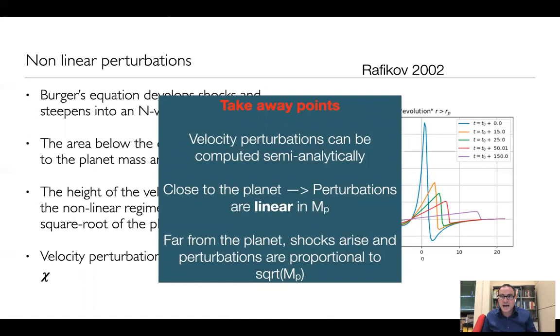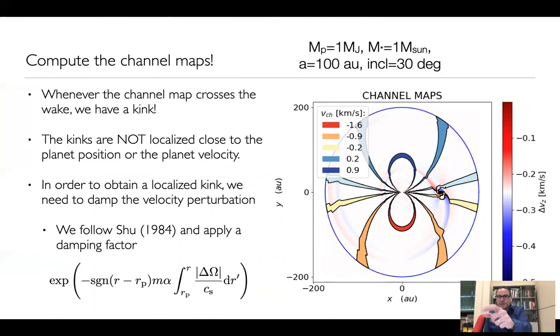Once we have the velocity perturbation, we can compute the isovelocity curves, or the channel maps, if you like. This is one example for the parameters written there on top. And what I show here is both the isovelocity curves and below it, I also show the wake in terms of the velocity perturbation. So one can see that whenever the channel map crosses the wake, we have a kink.